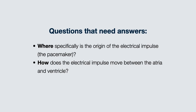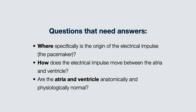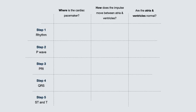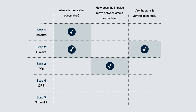Third, are the atria and ventricles anatomically and physiologically normal — for example, are they hypertrophied or receiving adequate cardiac perfusion? The first question is answered by Steps 1 and 2, the second by Step 3, and the third by Step 2 (P wave, atrial depolarization) and Steps 4 and 5 (ventricular depolarization and repolarization, respectively).